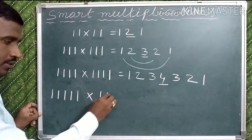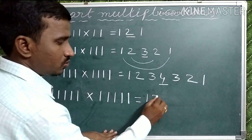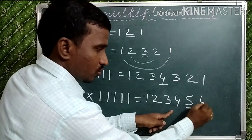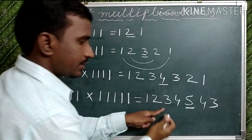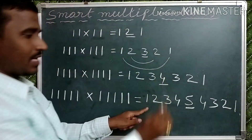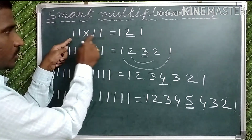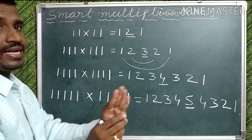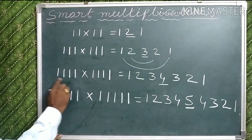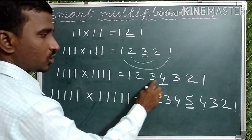Take four ones: 1111 into 1111. Four ones — write 1, 2, 3, 4, then before number 3, before number 2, before number 1. Take five ones: 11111 into 11111. Five ones — write 1, 2, 3, 4, 5, then 4, 3, 2, 1. For two ones: 2+2=4 digits. For three ones: 3+3=6 — answer is 5-digit number. For four ones: 4+4=8 — answer is 7-digit number.